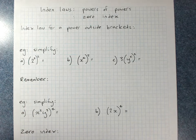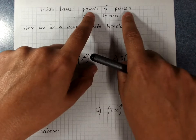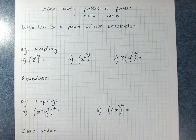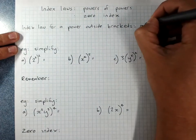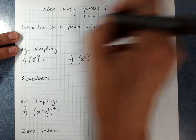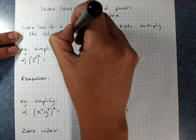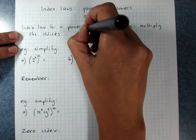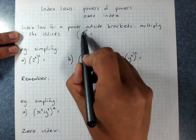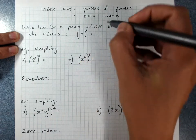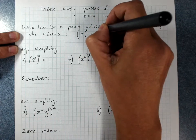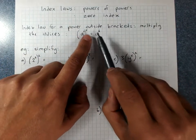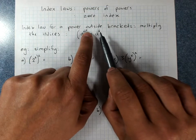Index laws — powers of powers, that is, powers outside brackets, and the zero index. The index law for a power outside the brackets is you multiply the indices. So if I had a to the power 2, to the power 3 — power outside brackets — we multiply the powers, and I'd get a to the power 2 times 3, which is 6. This is for powers outside brackets: multiply the powers, the little numbers.